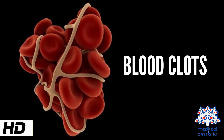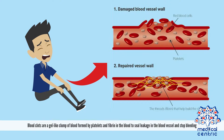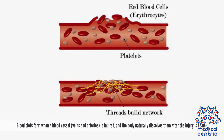Today's topic is blood clots. Blood clots are a gel-like clump of blood formed by platelets and fibrin in the blood to seal leakage in the blood vessel and stop bleeding. Blood clots form when a blood vessel, like veins and arteries, are injured, and the body naturally dissolves them after the injury is healed.